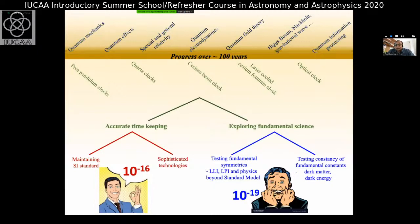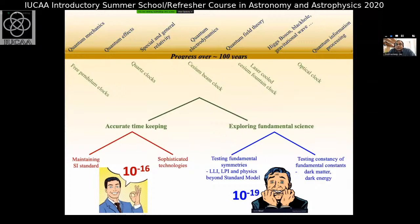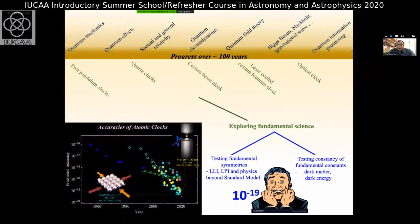For exploring fundamental science, clocks at 10 to the power minus 16 are not good enough. The best clocks available are on the order of 10 to the power minus 19, but we need even better clocks — on the order of 10 to the power minus 19 and beyond — to look into violations of fundamental symmetries and constancy of fundamental constants. The optical clocks shown — the yellow and cyan ones — have reached 10 to the minus 19 accuracy, very good but still needing further improvement.